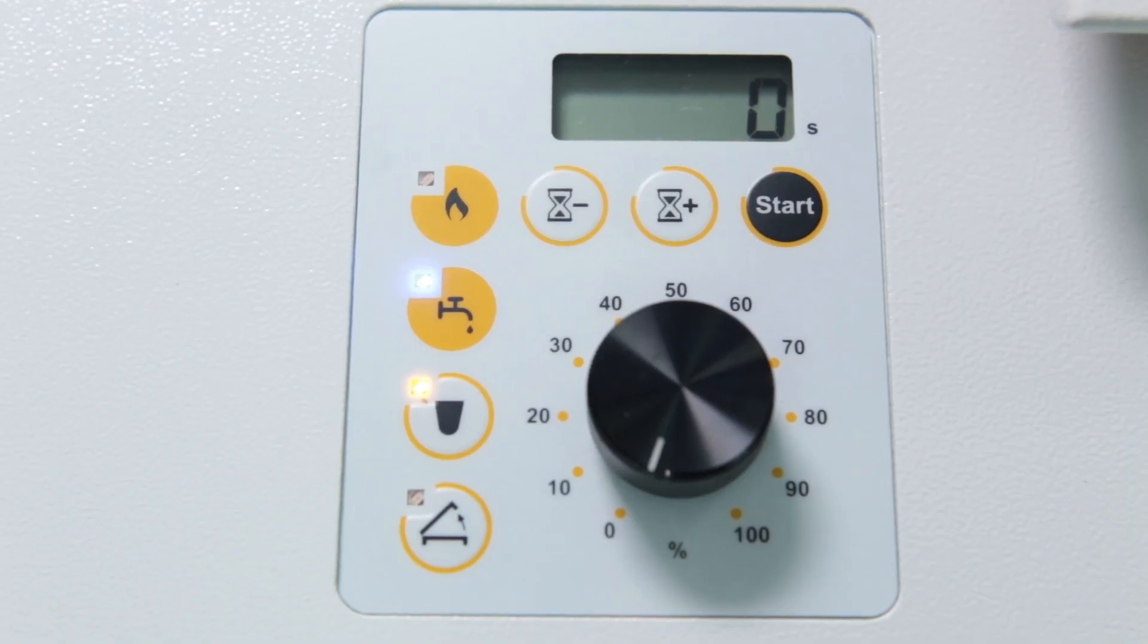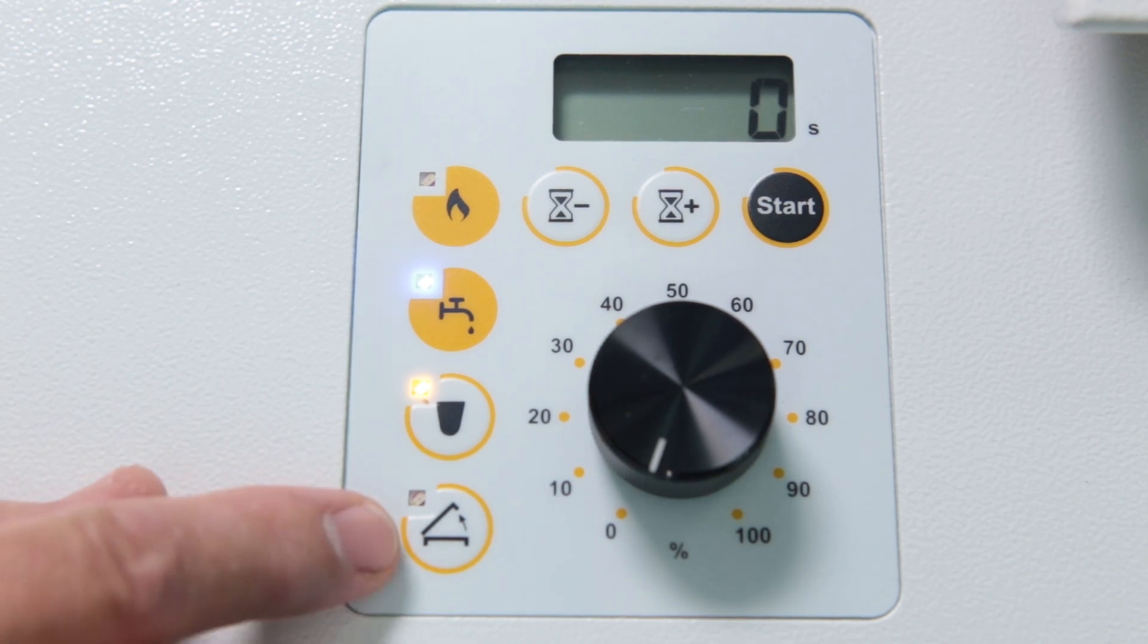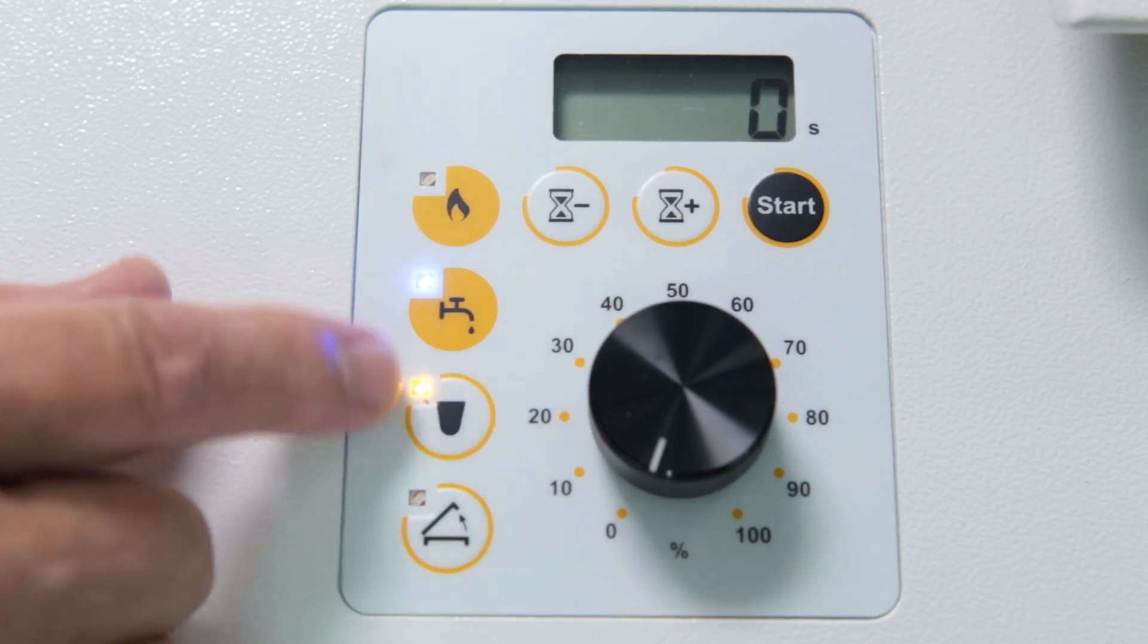This is the operating panel of the Fornax T, where all relevant functions can be set. This button shows whether the lid has been closed properly. It also opens the lid again, for example in order to place the mold.